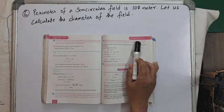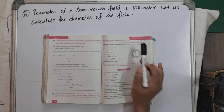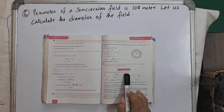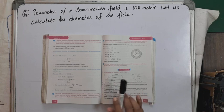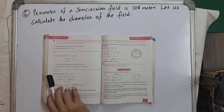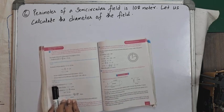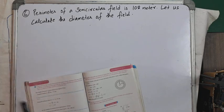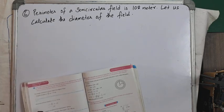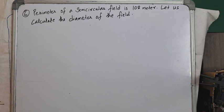Hello students, we are doing circumference of circle, chapter 16 from the class 9th book of the West Bengal Board of Secondary Education. We completed up to question number 5 in our previous video, so today we'll start from question number 6. If you find this video helpful, please subscribe to the channel and hit the like button.